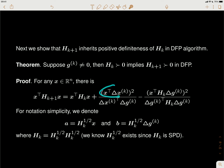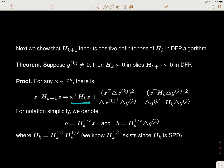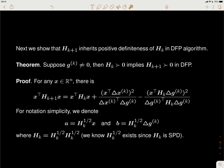What we need to do is show this is a positive number. The first term must be a positive number because we assume H_k is positive definite. What we need to show now is that this minus this is still a positive number.